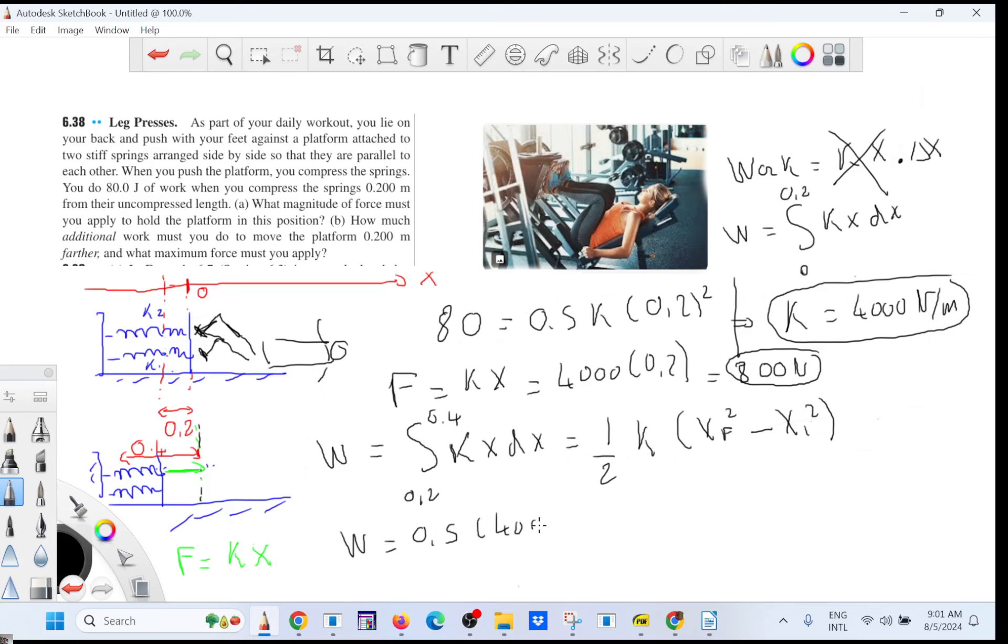That's going to be 4,000. That's going to be 0.4 squared minus 0.2 squared. And if you do that, it's going to be 240.